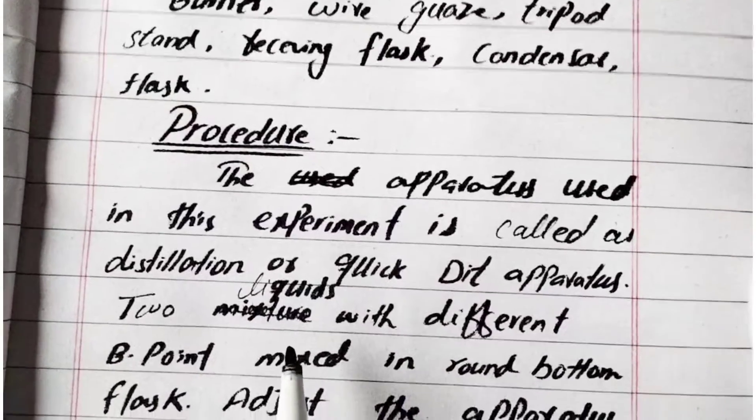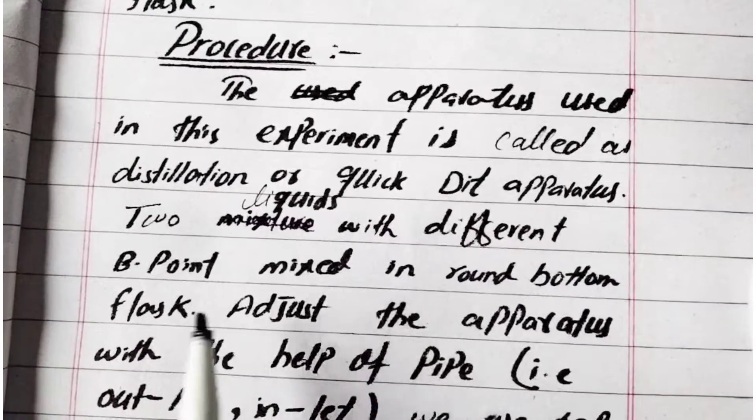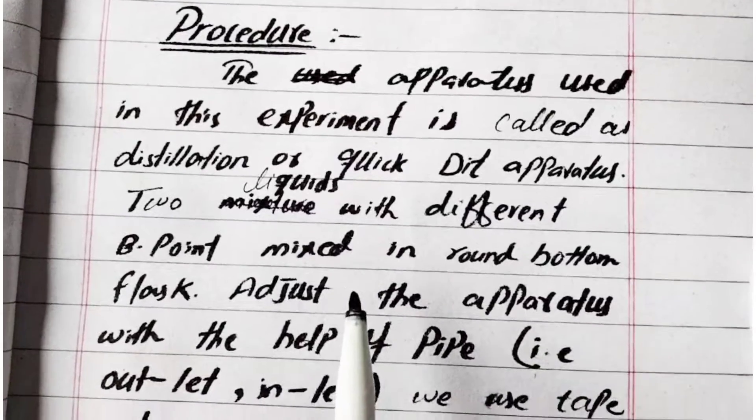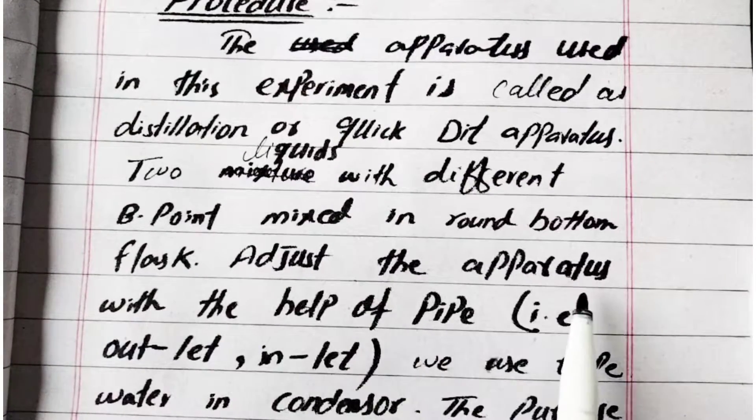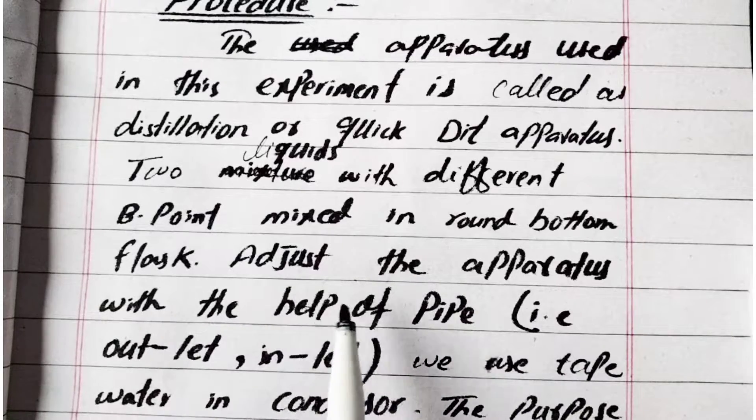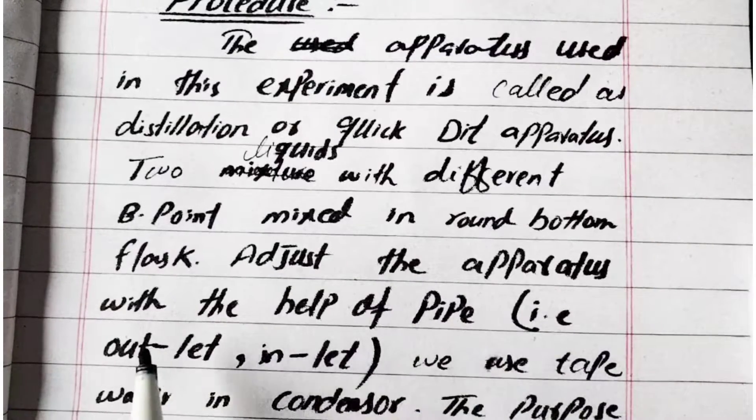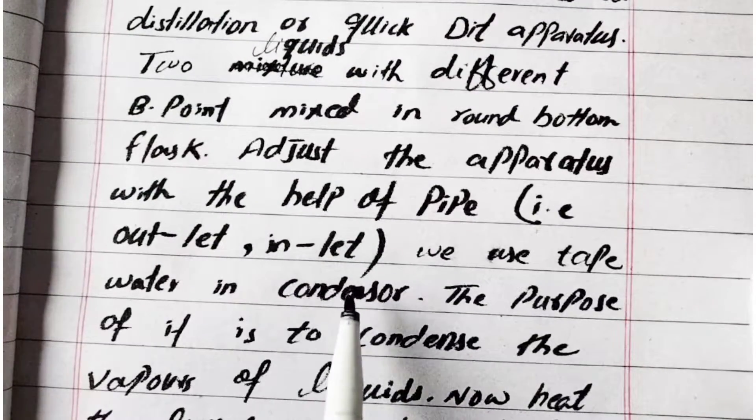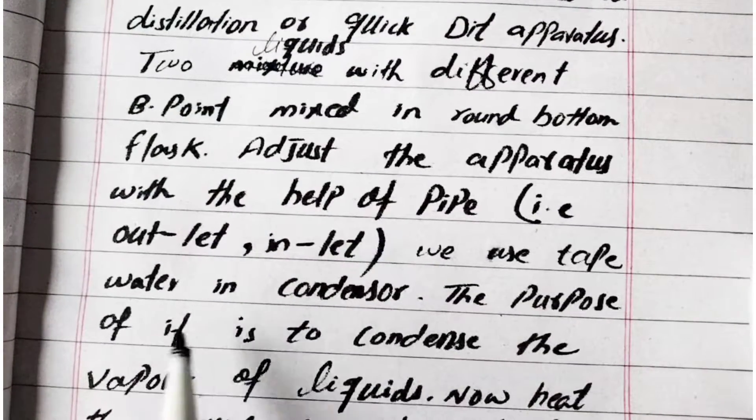Two liquids with different boiling points are mixed in a round-bottom flask, then adjust the apparatus with the help of pipes for inlet and outlet. We use tap water in the condenser.